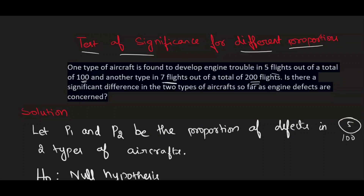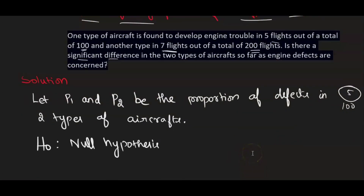The question asks: is there a significant difference in the two types of aircraft as far as engine defects are concerned? When they ask 'is there a significant difference,' we frame the null hypothesis as: there is no significant difference. We always frame H₀ this way.